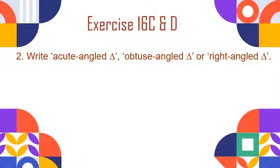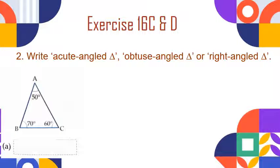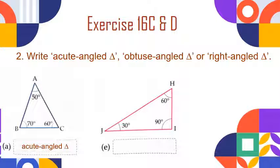The next question asks whether each triangle is an acute angle triangle, obtuse angle triangle, or right angle triangle. In the first figure, triangle ABC has angles of 50 degrees, 70 degrees, and 60 degrees. All three angles are less than 90 degrees, so this is an acute angle triangle. In the second figure, triangle HIJ has two acute angles of 30 degrees and 60 degrees, and one angle equal to 90 degrees. A triangle with one angle equal to 90 degrees is called a right angle triangle.